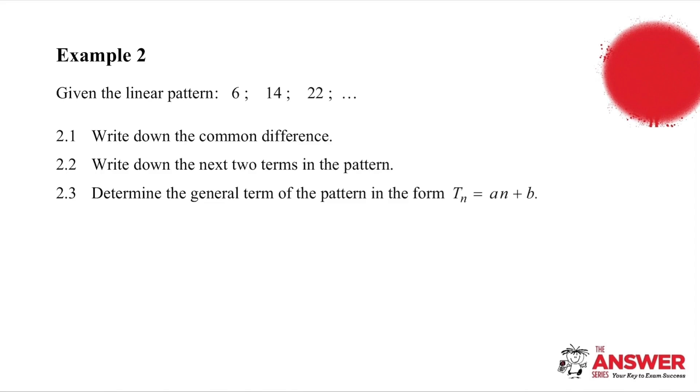Okay, so what do we know? If we take six and 14, the difference is eight. If we take 14 and 22, the difference is still eight. So we have a common difference of eight. We can easily generate the next two terms because we are simply adding on eight each time. So we are going to get 30 and 38.